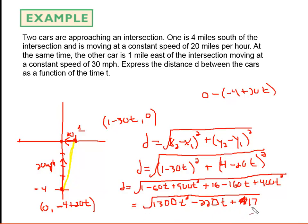So the distance as a function of time is the square root of 1300t squared minus 220t plus 17. As you work on these problems, if you've got questions, post on the discussion board and we can help each other out. See you in the next one.